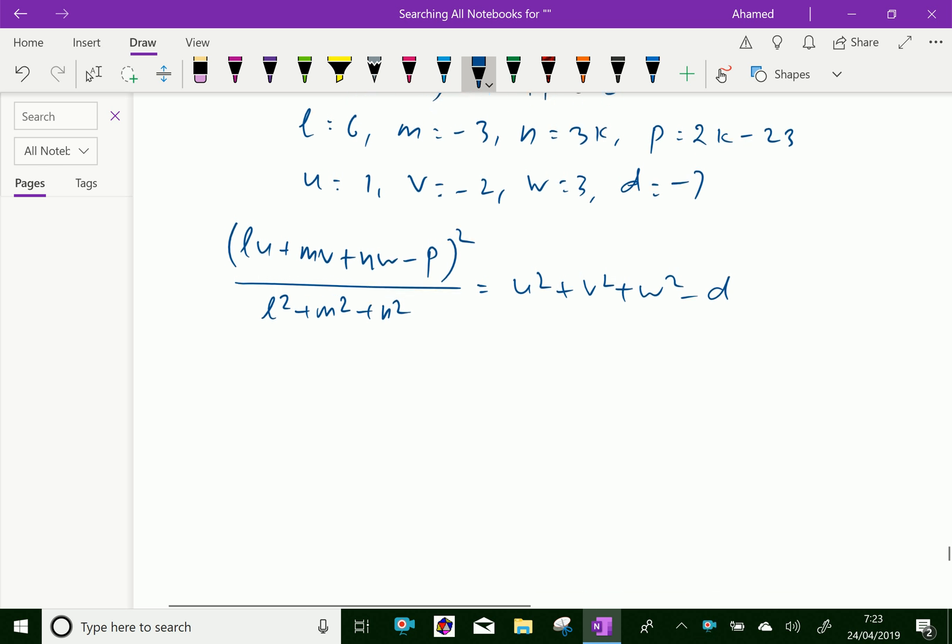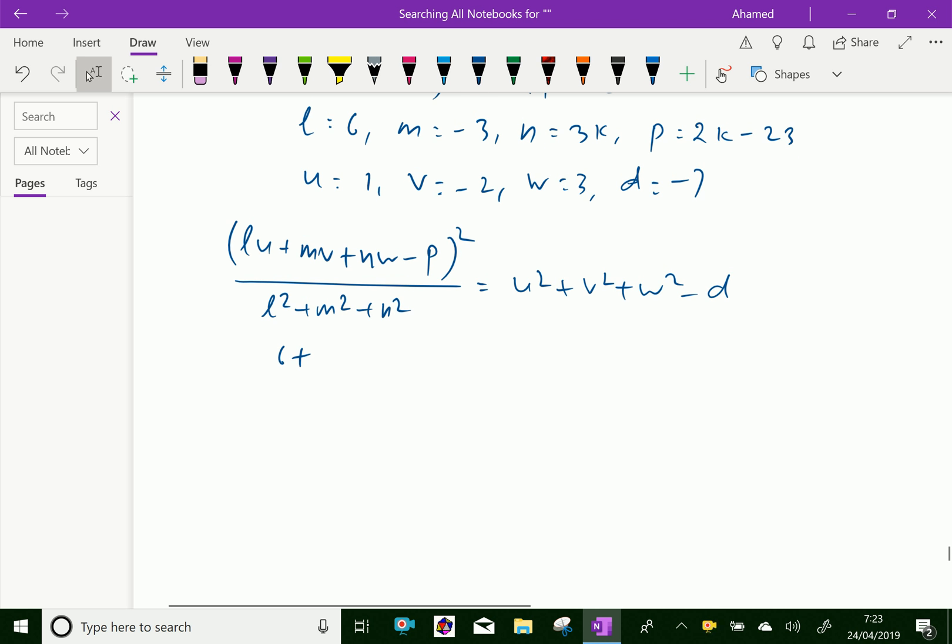Now, let us apply the values of l, m, n, p and u, v, w and d. We will get lu is 6 times 1. 6 + 6 + 9k